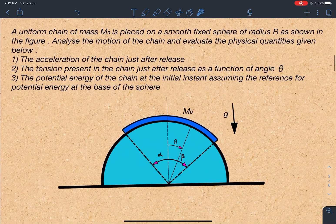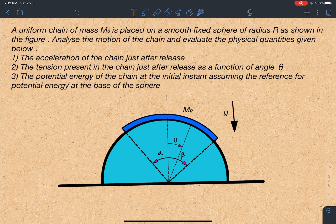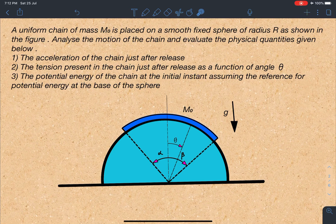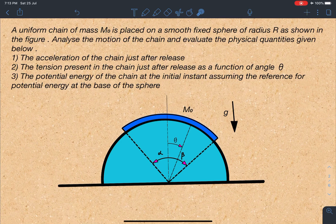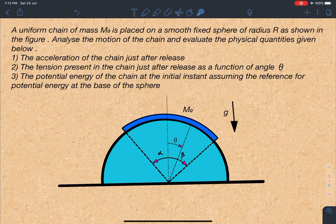Here is the statement of this problem. A uniform chain of mass M0 is placed on a smooth fixed sphere of radius R as shown in the figure. Analyze the motion of the chain and evaluate the physical quantities given below: 1) The acceleration of the chain just after release, 2) The tension present in the chain just after release as a function of angle theta, and 3) The potential energy of the chain at the initial instant assuming the reference for potential energy at the base of the sphere.